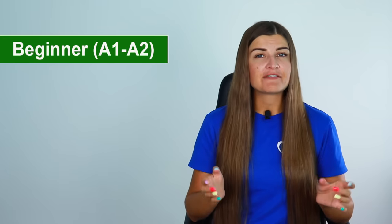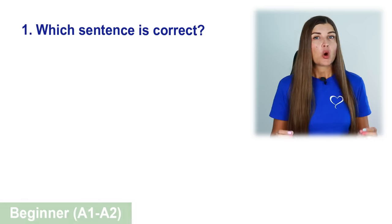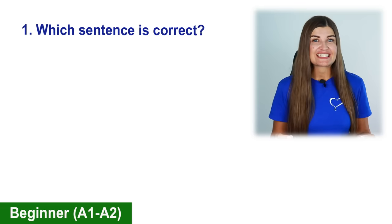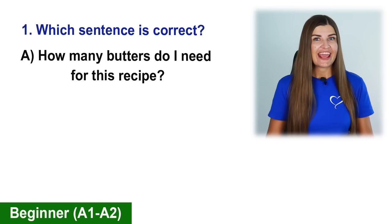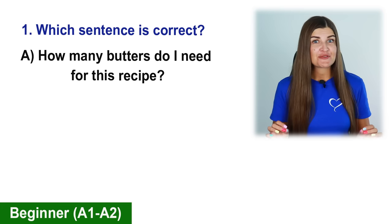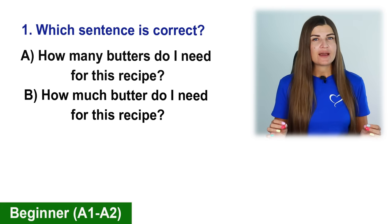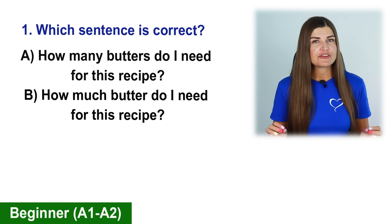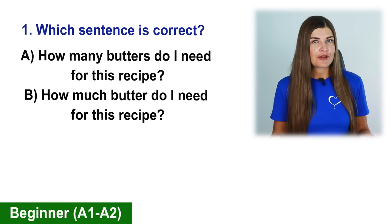The first five questions are for the beginner level. Question 1: Which sentence is correct? A. How many butters do I need for this recipe? B. How much butter do I need for this recipe?